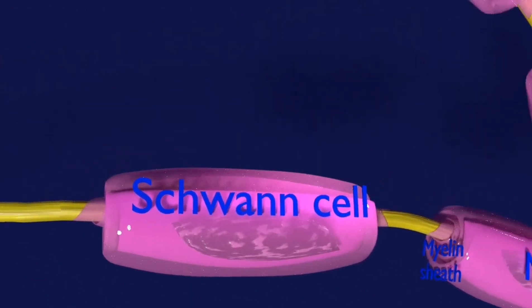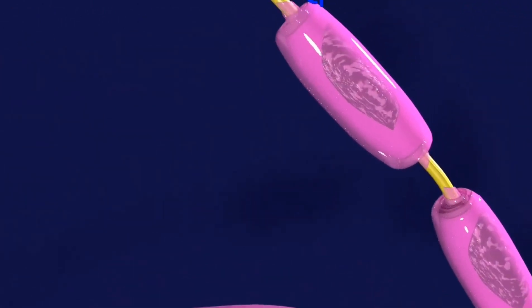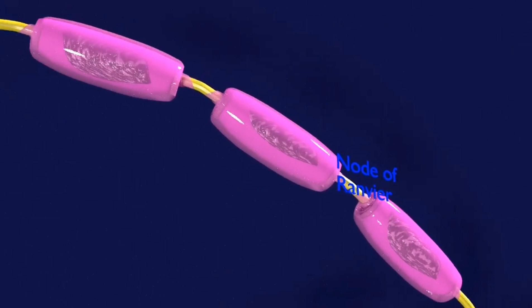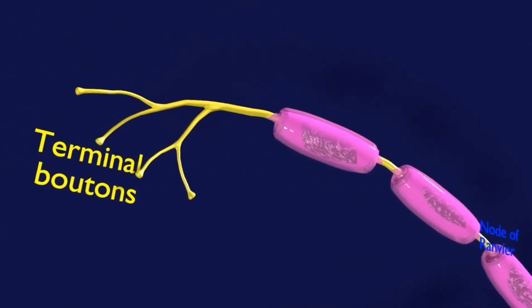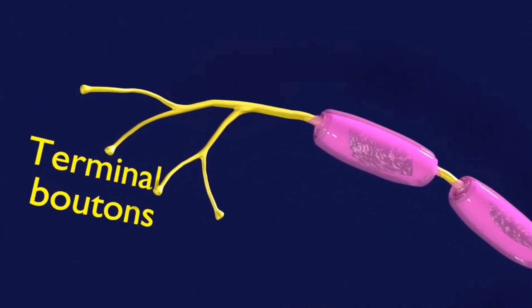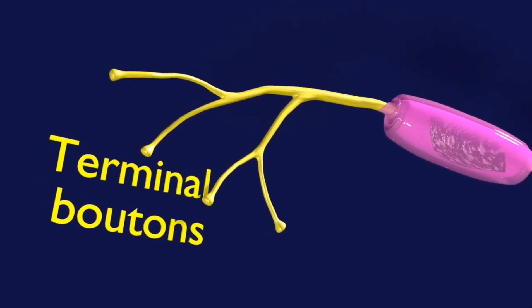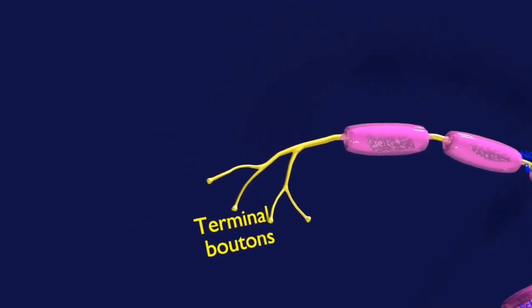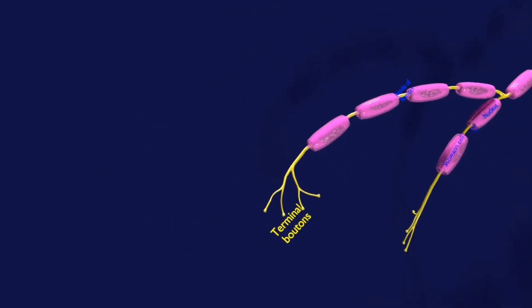The axon is interrupted by non-myelinated segments called nodes of Ranvier. At the farthest tip of the axon branches are the axon terminals, where the neuron can transmit a signal across the synapse to the other cell.